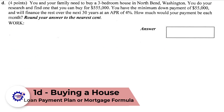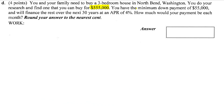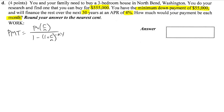Last one: you and your family need to buy a three-bedroom home in North Bend, Washington. You can buy one with a minimum down payment of $55,000, and finance the rest over 30 years at an APR of 4%. What would the monthly payment be? This looks like a payment plan, so the formula is: Payment = P × (R/N) / (1 − (1 + R/N)^(−N×Y)). P is the purchase price minus $55,000.